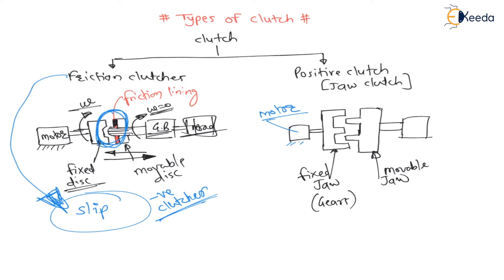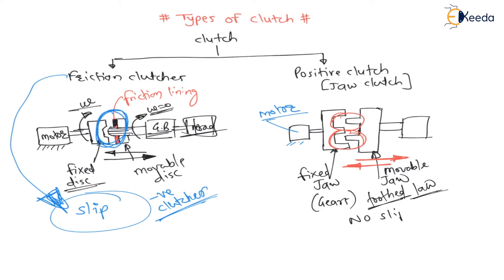It is a positive device. Whenever this movable jaw moves towards the right, the clutch is disengaged. Whenever this movable jaw moves towards the left, the teeth of the jaw engage with each other, and power is transmitted. As it is tooth-driven, there is no slip — slip is never possible. Hence, it is called a positive drive, hence it is called a positive clutch. Whenever there is no slip, it is a positive clutch; whenever there is slip, it is a negative clutch.